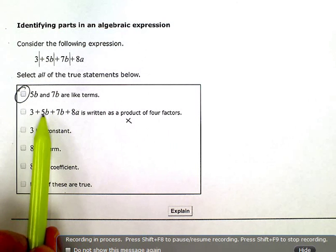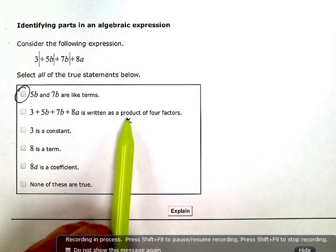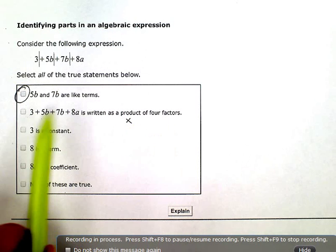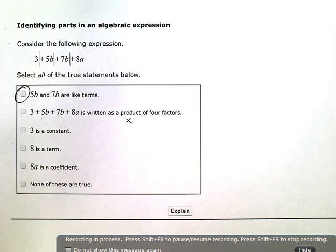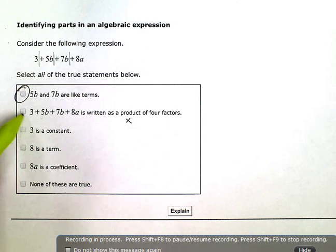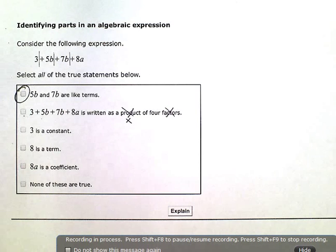So they're actually talking about the terms. And to separate terms, I'm adding, not multiplying. So this isn't a product of four factors. This is the sum of four terms. This one is false. These are not the correct words to describe this expression.